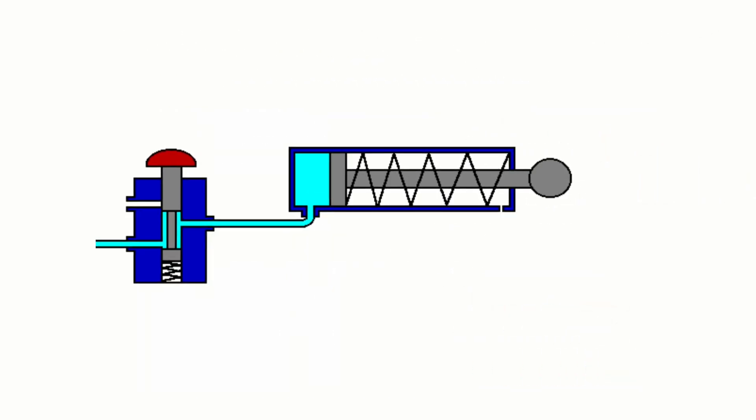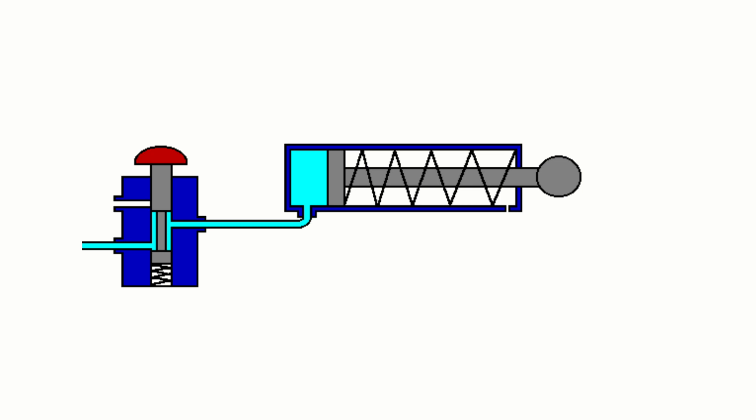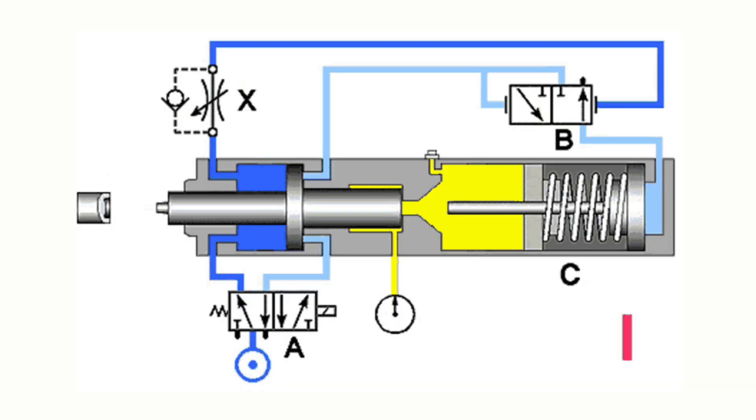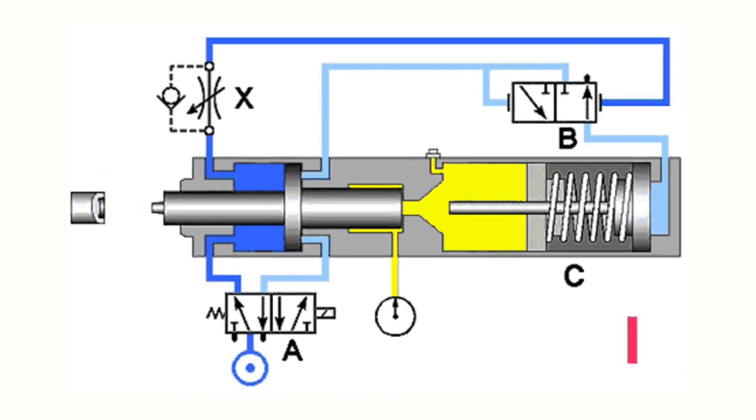This device uses the pressure imparted by the compressed air to create a driving force in one direction and it would return back to its position with the help of a spring. The extension of this cylinder is limited because of the space that the compressed spring uses.